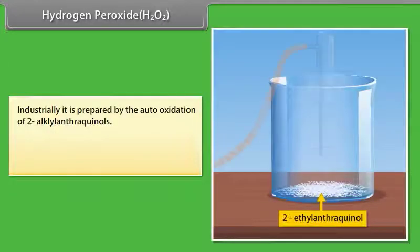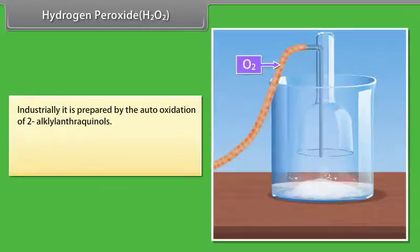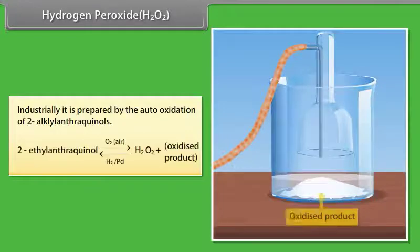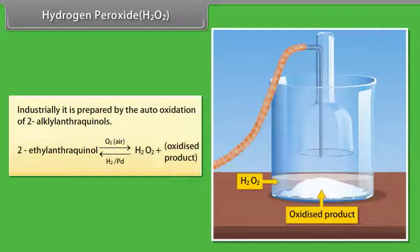Industrially, it is prepared by the auto-oxidation of 2-alkyl-anthraquinols. When 2-ethyl-anthraquinol is oxidized in the presence of hydrogen or palladium, it gives hydrogen peroxide.